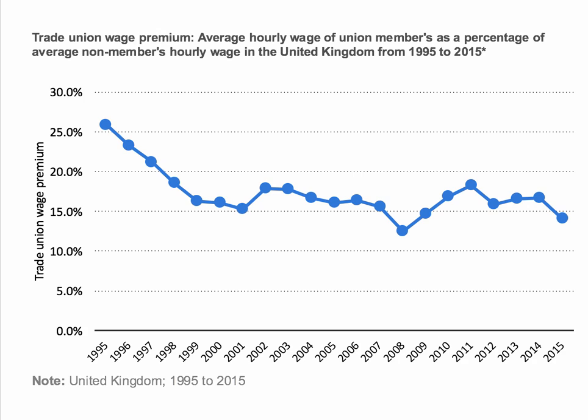What's the extent to which trade unions in the UK do exert a wage premium? This chart shows the average hourly wage of union members as a percentage of the average non-member's hourly wage in the UK — in other words, do unions have a premium wage? And the answer is yes. On average, workers in trade unions have a wage premium of around 15% compared to non-members' hourly wages.